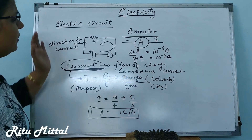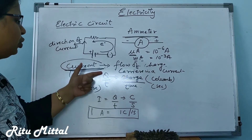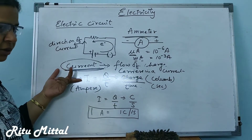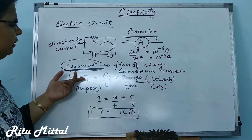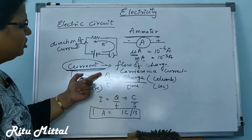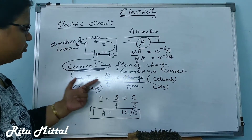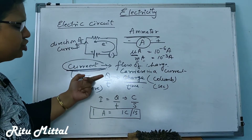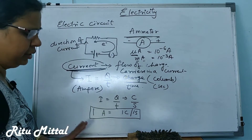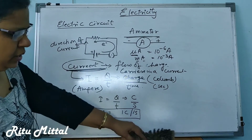Current will flow only if the circuit is closed. So far, we have learned the first formula: I = q / t. I is for current, q is for charge carriers measured in coulombs, and t is for time. Current is the number of charge carriers per unit time — how much charge is flowing in the circuit.